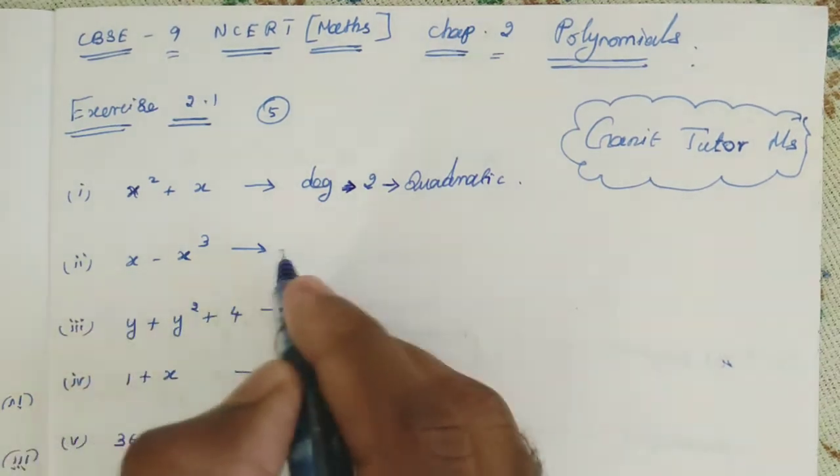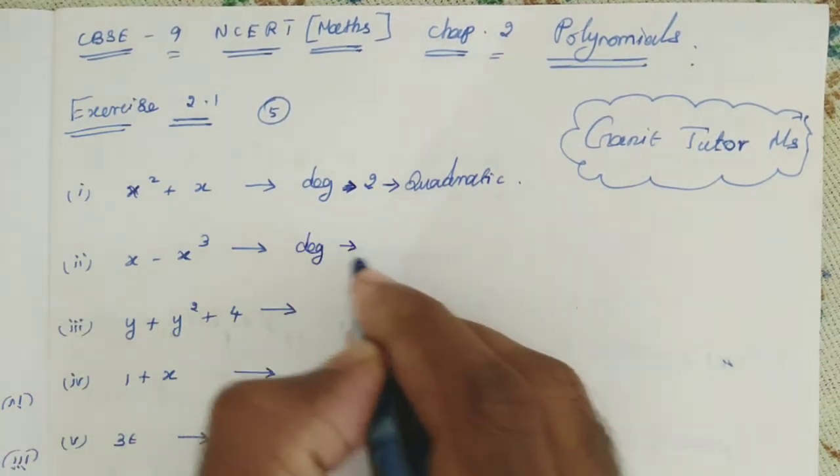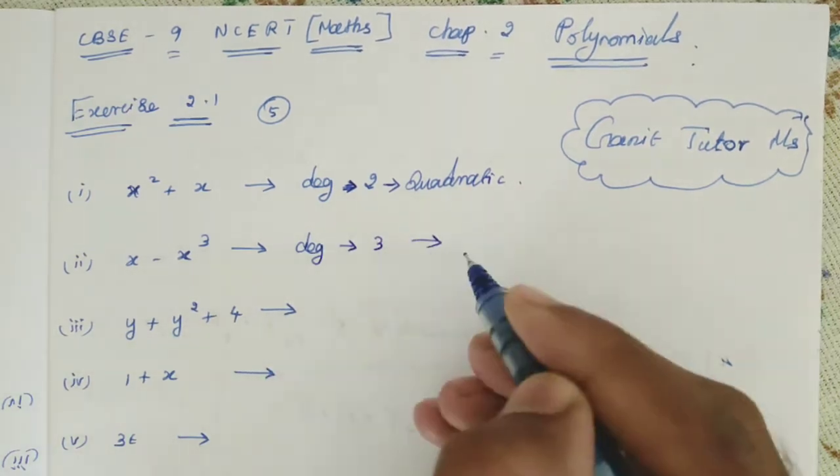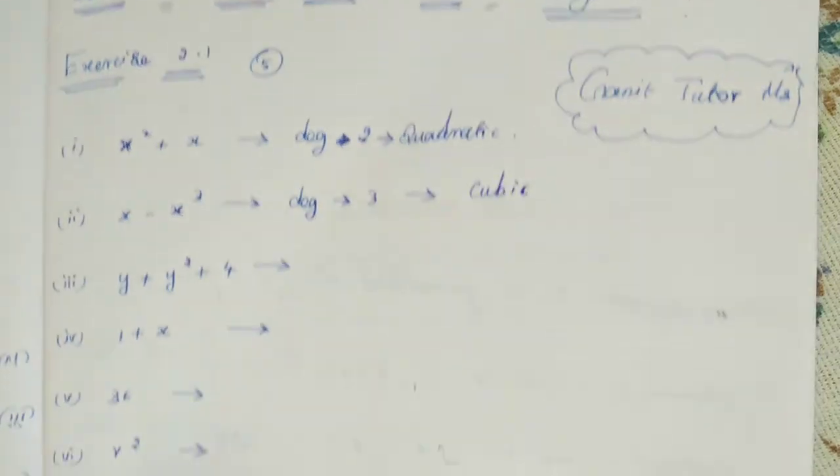Next step. See here. What is the power here? 3. So degree is 3. What kind of polynomial it is? Cubic. So cubic polynomial.